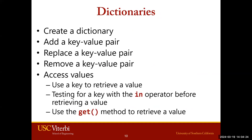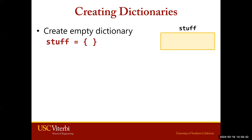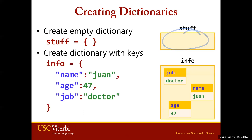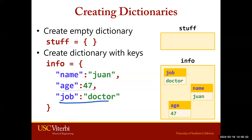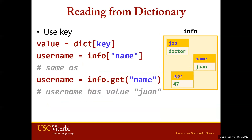With a basic understanding of dictionary structures and requirements, we'll go over implementation and use: how to create a dictionary, how to add, replace, and remove a key-value pair, and how to access values in a couple of ways. To create a dictionary, you can create an empty dictionary just by using the curly braces. You can also create dictionaries with initial key-value pairs. Here, info has three key-value pairs: name-Juan, age-47, job-doctor.